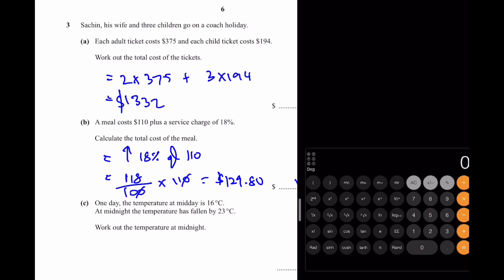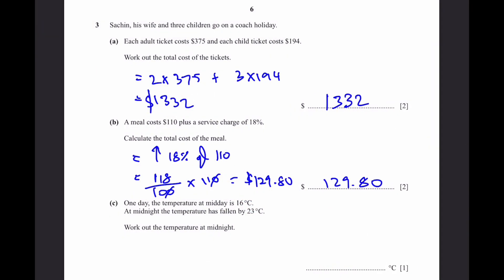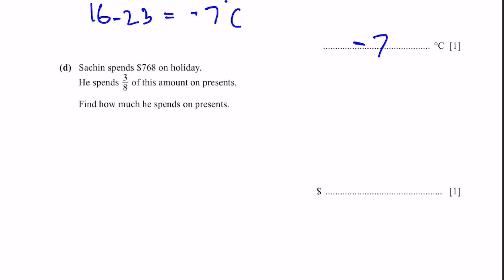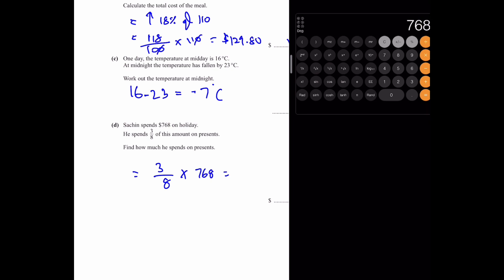Part C: The temperature at midday is 16°C. At midnight it has fallen by 23°. Temperature at midnight = 16 − 23 = −7°C. Part D: Sachin spends $768 on holiday and 3/8 on presents. Amount spent on presents = (3/8) × 768 = $288.